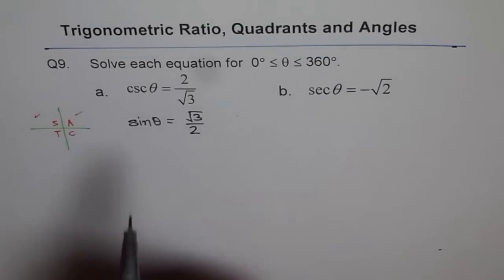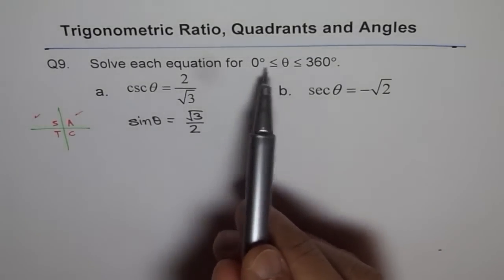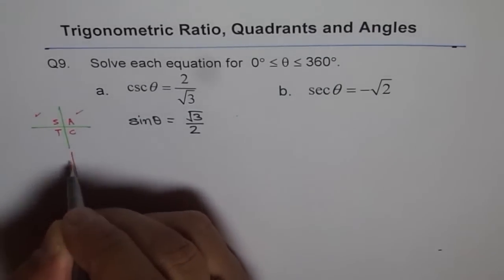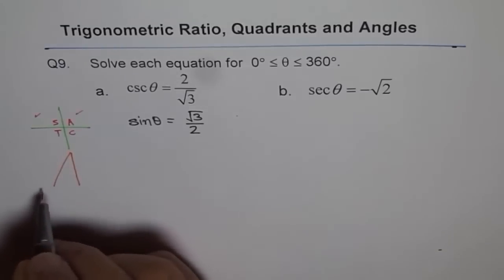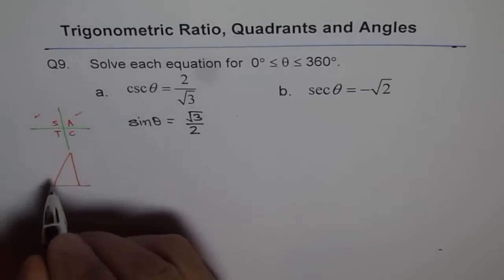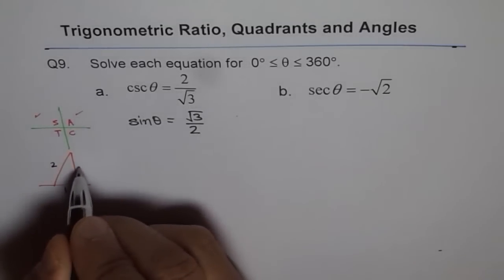So we have two possible solutions in the domain of 0 to 360 degrees. We can also consider our special triangles. Since we have square root 3 over 2, 30-60-90 is a good triangle and that is this one.